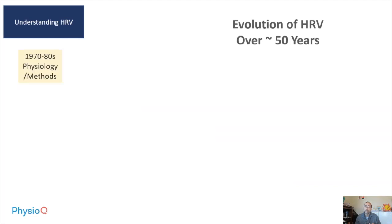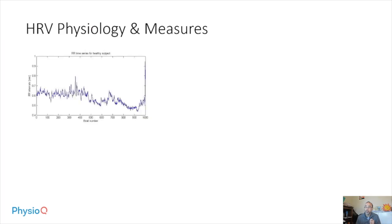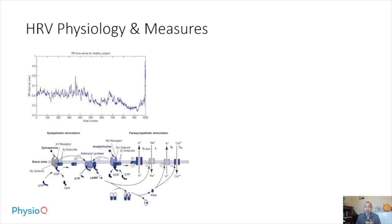The first stage of understanding HRV occurred in the 1970s and 1980s, which was a strong age for physiology in general. This is when we began to understand what biological processes contribute to heart rate fluctuations, including respiratory sinus arrhythmia, baroreflex, and other physiological processes. This was also a time when we identified the signaling pathway involved in heart rhythmicity and the role that the autonomic nervous system plays in modulating it.